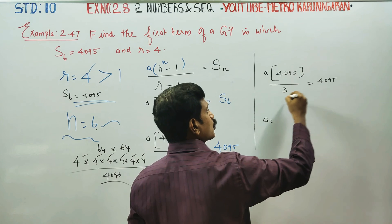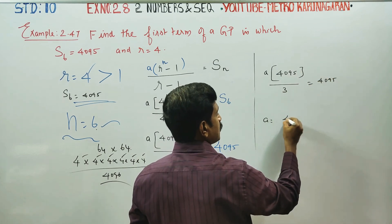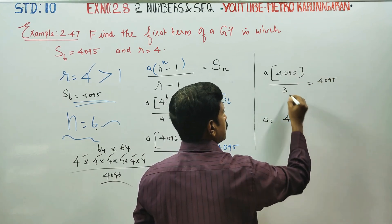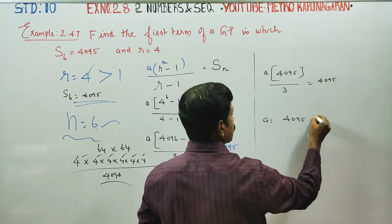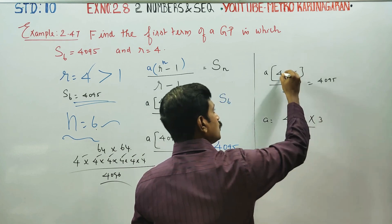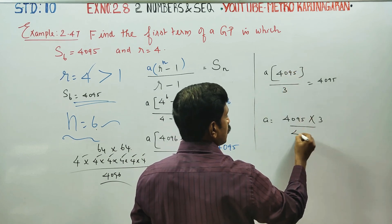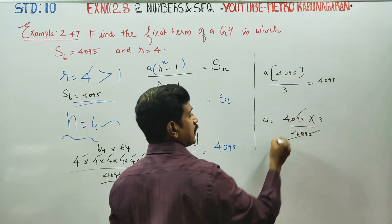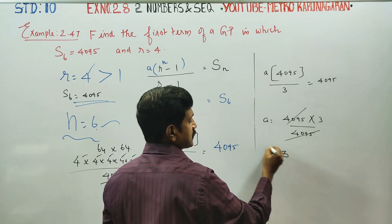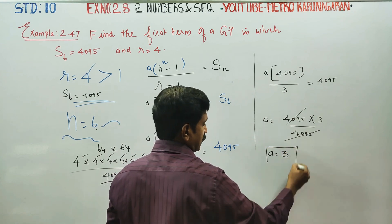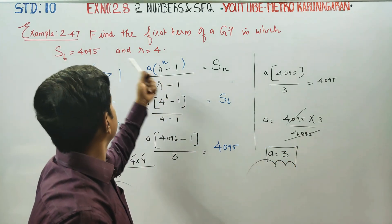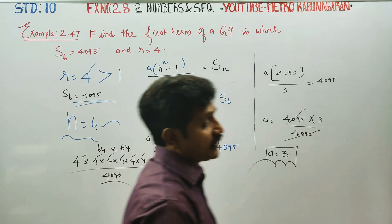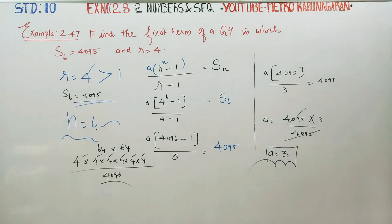A is equal to — we cross multiply. Denominator into numerator, denominator into denominator. A is equal to 3. This is our answer. Therefore, we have found comfortably the value of A is 3. Thank you.